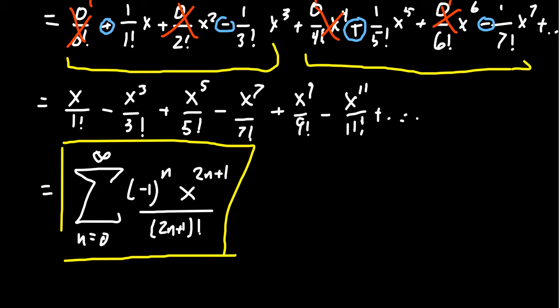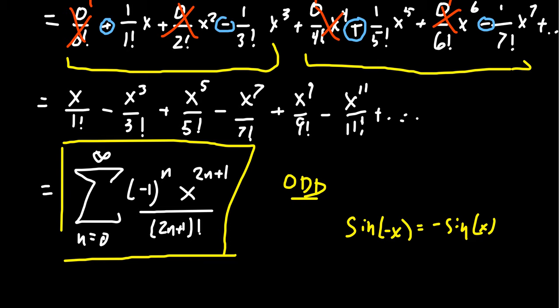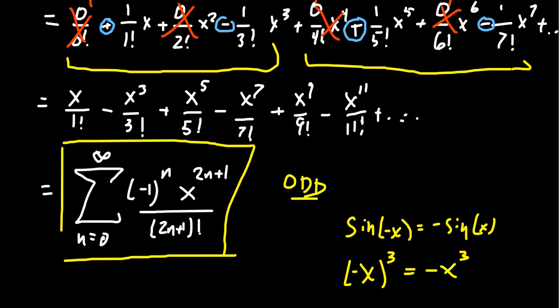For sine, the Maclaurin series only involves odd powers — which is curious because sine is an odd function. Sine has the property that sine of negative x equals negative sine of x. We get this because when you take an odd power, negative x cubed is the same as negative x cubed. So it's not a coincidence that the powers of x are odd for an odd function — that's something we'll talk about more later.